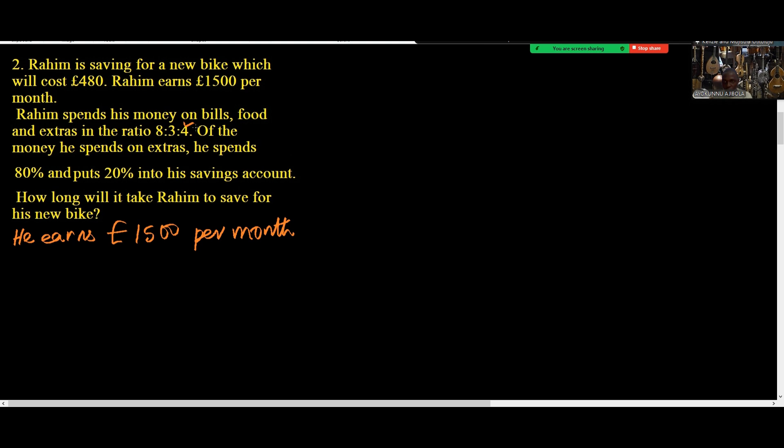Then extras is what we're concentrating on now because the question says from the extras he made the savings, which is 20% of the extras. So how long is it going to take him to save for his new bike?